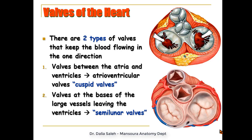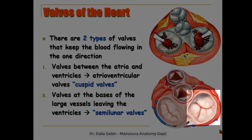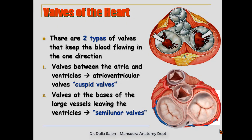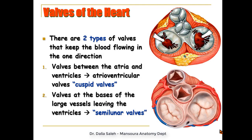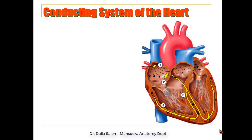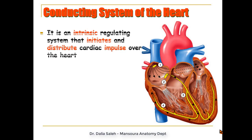Between the atria and the ventricles are the atrioventricular valves or cuspid valves — tricuspid on the right side and bicuspid on the left side. There are also valves at the bases of the large vessels leaving the ventricles, called semilunar valves. Within the heart there is an intrinsic regulating system that initiates and distributes the cardiac impulse over the heart.